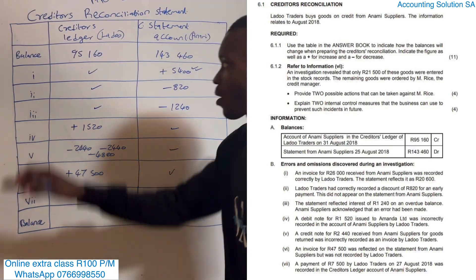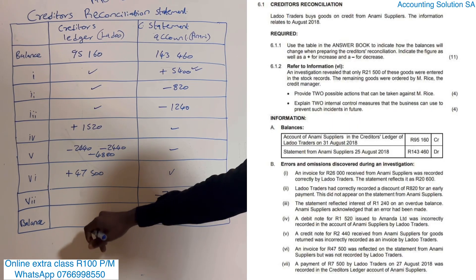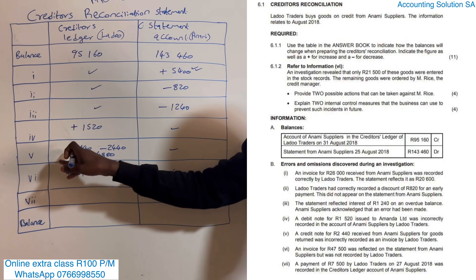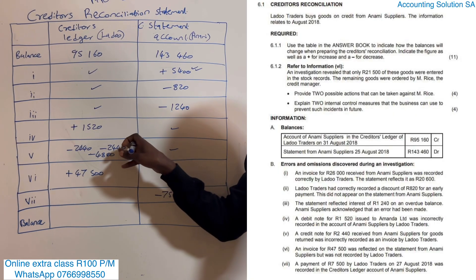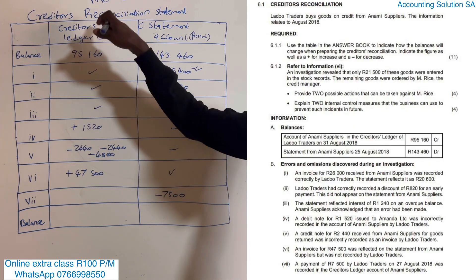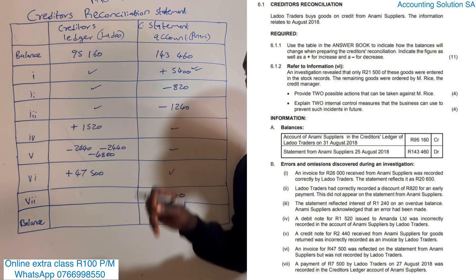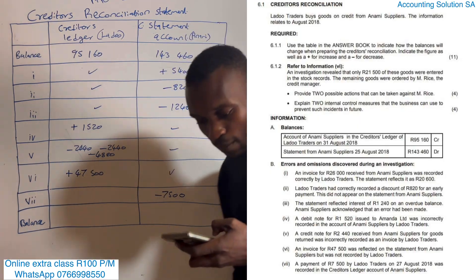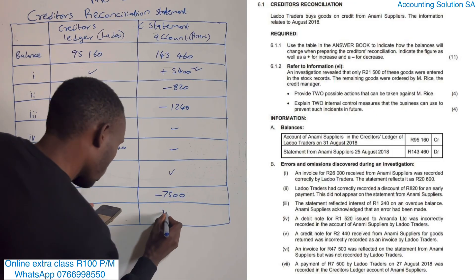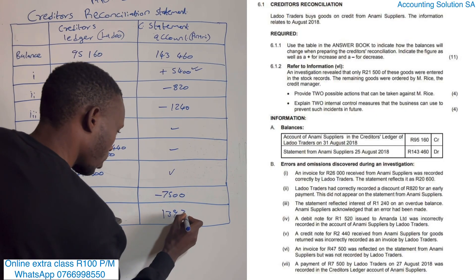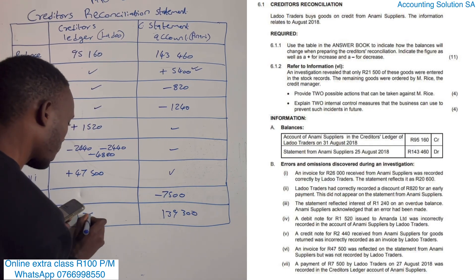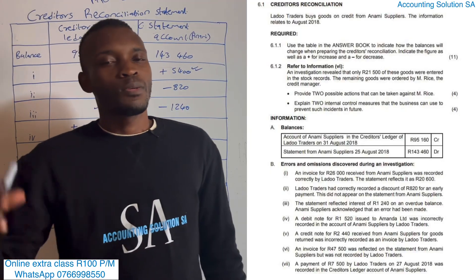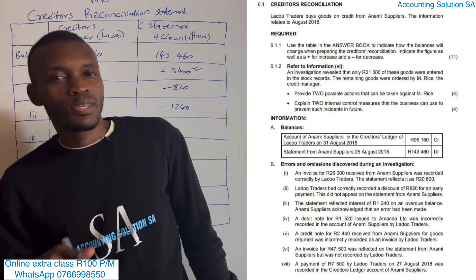Now what do we do next? We must calculate the total on this side and see if we get the same total on that side. Remember, if you have minus 244, you also have to reflect minus 244 on the other side. Simply add everything and subtract the total - don't do this side and then repeat it again or you will never get it right. The total on both sides should come to 139,300. That's how you do it.